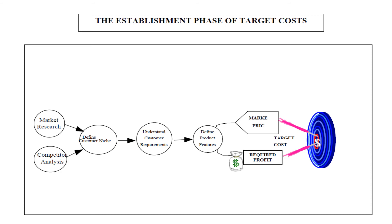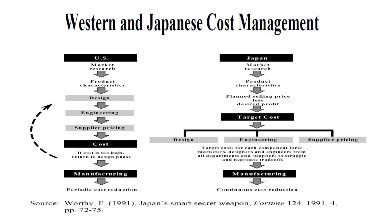The target costing process starts with market research — you look at the market and the customer, examine which features provide value, and determine the price prevalent in the market. Deducting your profit gives you your target cost. This is illustrated graphically comparing how target costing is used in Japan versus the cost-plus pricing approach used in the US. Once you find your target cost, you use value engineering, design, and value chain analysis to ensure you meet that target before manufacturing begins.